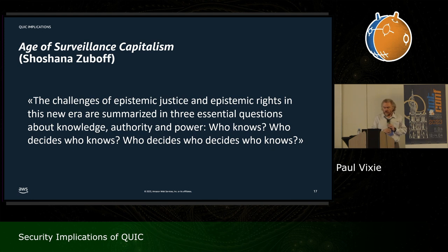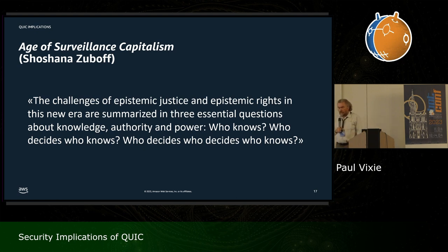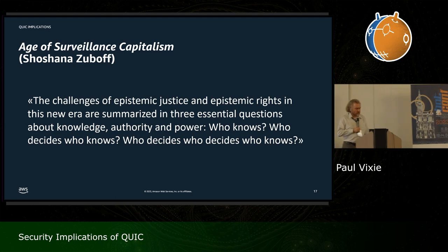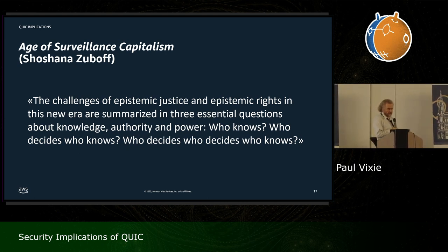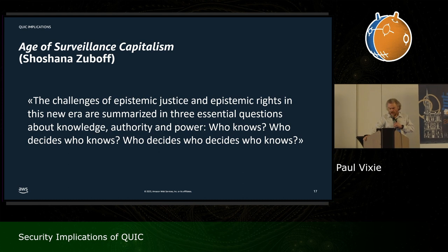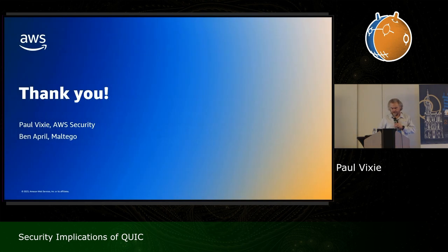If you haven't heard of Shoshana Zuboff, I urge you to go get her book. She predicted all of this before Snowden went to Hong Kong and before the IETF set its hair on fire. I'll just read one quote: 'The challenges of epistemic justice and epistemic rights in this new era are summarized in three essential questions about knowledge, authority, and power: Who knows? Who decides who knows? Who will decide who decides who knows?' This used to be up to us. It turns out we looked like bad stewards.